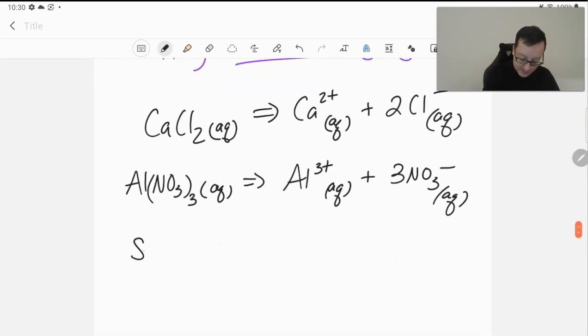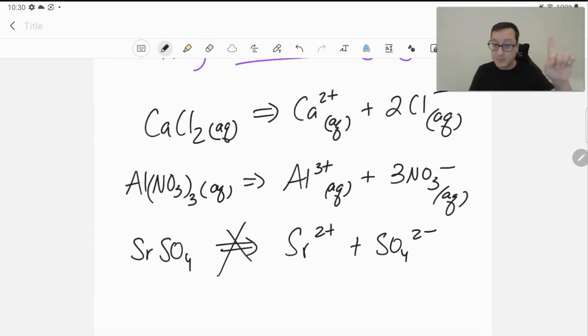However, if we have something like strontium sulfate, we can say this does not break apart into its ions. Notice, by the way, as well, we're always keeping our polyatomic ions together. Nitrate stays as nitrate, sulfate stays as sulfate. We don't ever mix those up until next semester, when we start doing electrochemistry. Sorry.